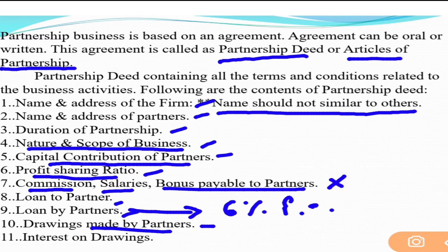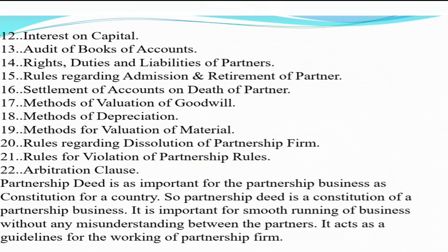So drawings made by the partner and interest on drawings are two things that must be decided in advance. Next: interest on capital — how much percent interest will partners receive from the firm on the capital they have invested. Interest on drawings and interest on capital must be decided by the partners themselves. If not decided in advance, no interest will be charged on drawings and no interest will be given on capital.